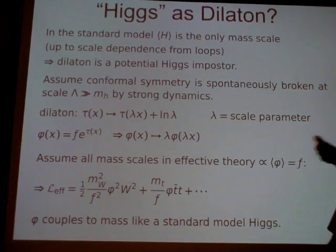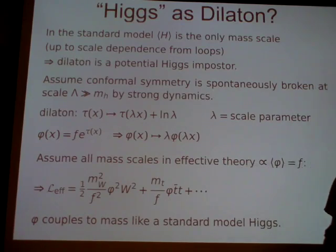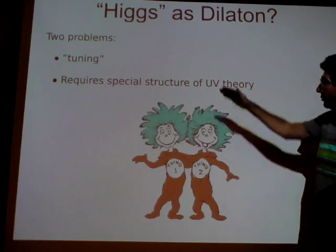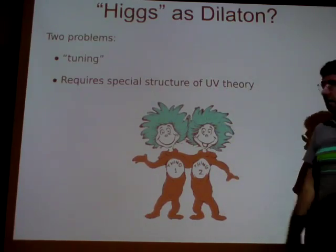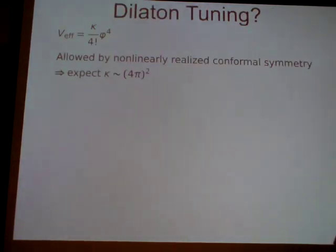But this φ needs to have nothing to do with electroweak symmetry breaking. What I'm going to explain is that there are two problems with this. One is a tuning problem, exactly analogous to the tuning problem I talked about before. The other is that if you want to avoid this tuning — or at least some of it — you have to require very special structure in the UV theory.